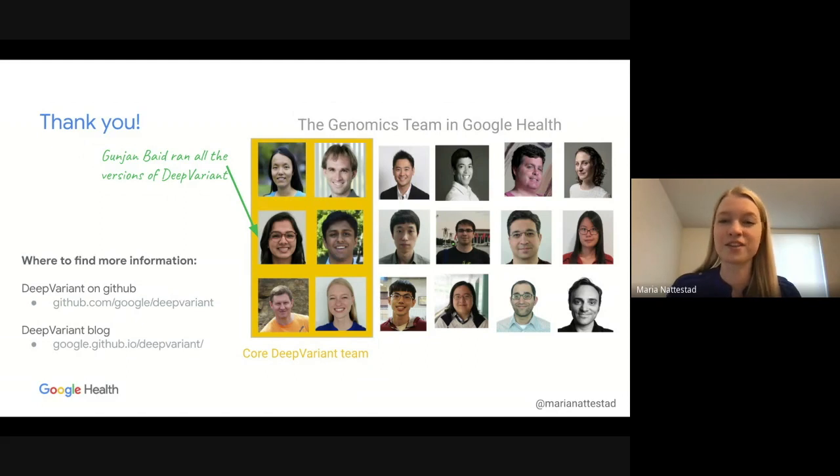I want to thank everyone on the genomics team in Google Health and especially the core DeepVariant team. Particularly Gunjan Baid who helped to run all the versions of DeepVariant so I could have those nice charts to show with accuracy and runtime for this talk. If you want to find out more information about DeepVariant, a great place to do it is our GitHub where you can also ask questions on the issues. Please check out our blog. Normally I'd ask for questions at this point, but the presentation is just over because this is online. Thank you all and goodbye.